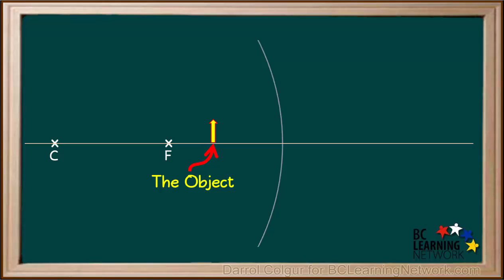In this example, the object is between the focal point and the mirror. We'll start by drawing a horizontal line from the top of the object to the surface of the mirror. Remember, it must be parallel to the principal axis. This ray is reflected back from the mirror and goes through the focal point.